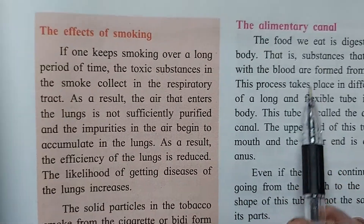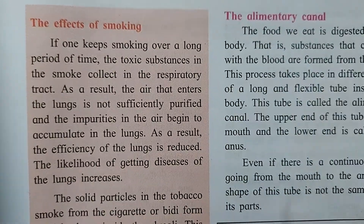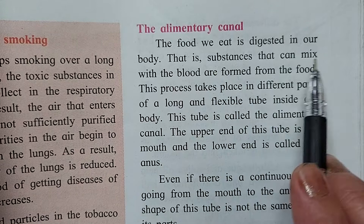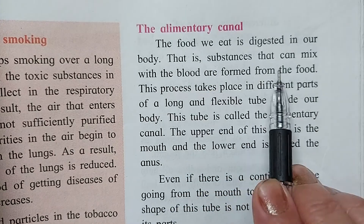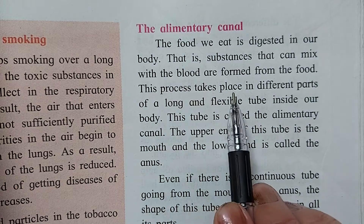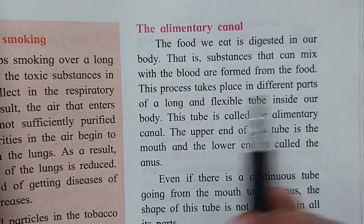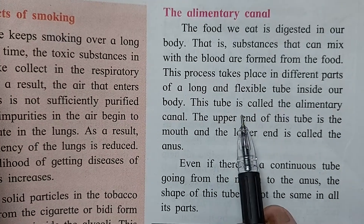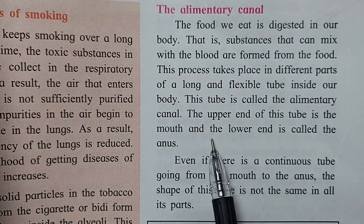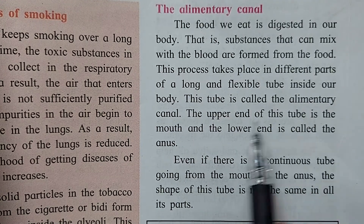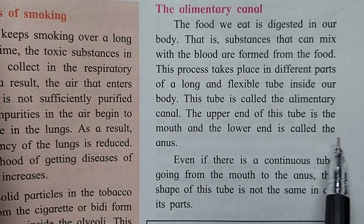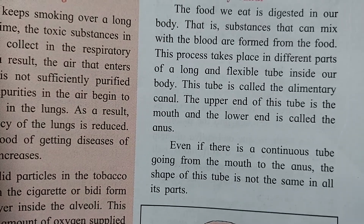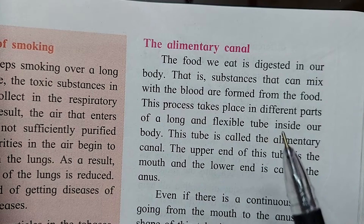The food we eat is digested in our body — substances that can mix with the blood are formed from the food. This process takes place in different parts of a long and flexible tube inside our body. This tube is called the alimentary canal. The upper end of this tube is in the mouth and the lower end is in the anus. The digestion begins in the mouth, that is why its upper end is in our mouth.